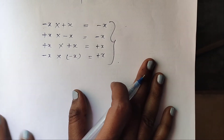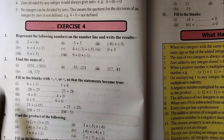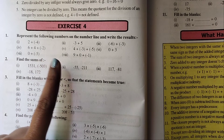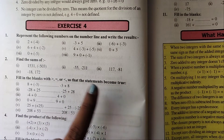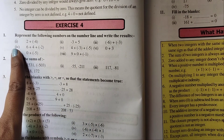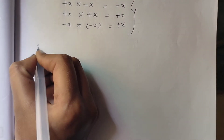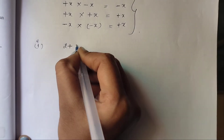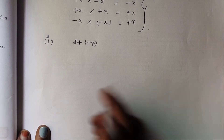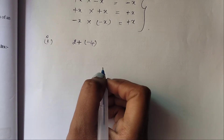Now students, Exercise 4, Question 1: represent the following numbers on the number line and write the results. The first question is 2 plus minus 4. We need to show this on the number line, but first let's solve it simply to see what the answer is.